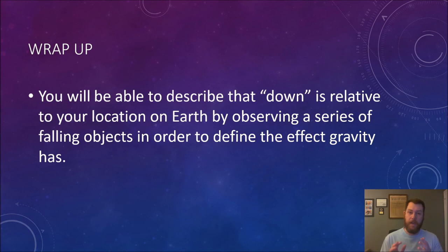OK, so now you should be able to describe that down is relative to your location on Earth. When you drop an object, what's going to happen? Well, you now know that gravity is going to pull things down. And where is it pulling it? Well, you now know that gravity is pulling things towards the center of our planet.